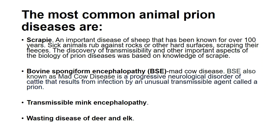The most common animal prion diseases include scrapie, bovine spongiform encephalopathy, transmissible mink encephalopathy, and wasting disease of deer and elk. Notably, scrapie has been known in sheep for over a hundred years, but it was not known until much later that these diseases are caused by prions. Bovine spongiform encephalopathy, or mad cow disease, is a progressive neurological disorder of cattle that is transmissible.